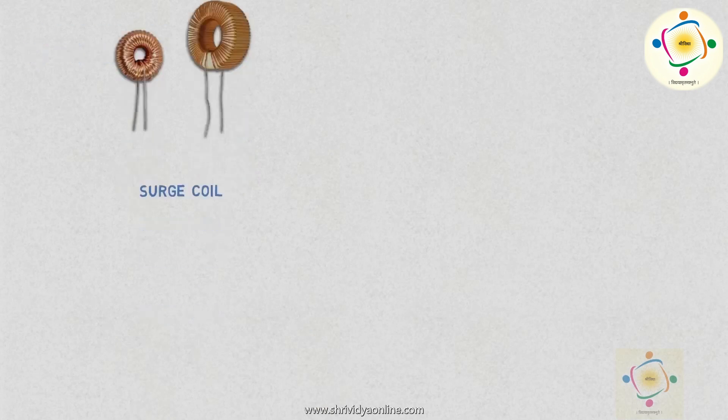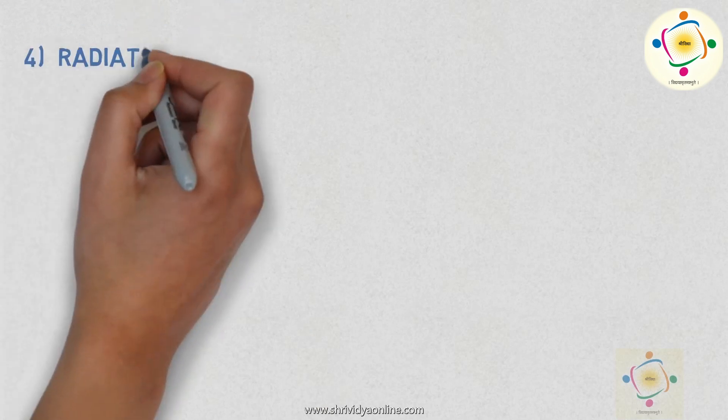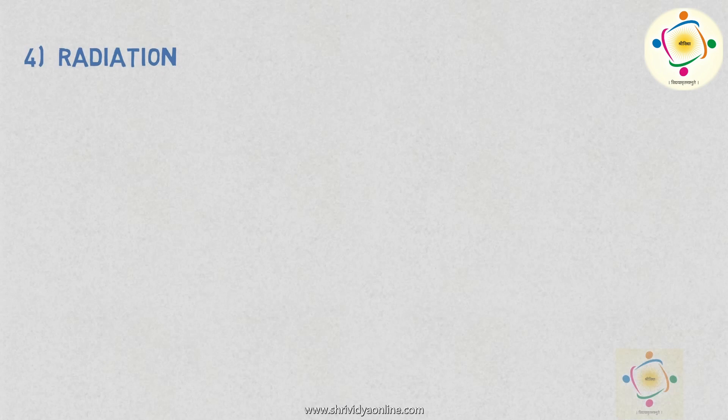The fourth one is radiation transducers. The example of radiation transducers is phototube or photodiode.